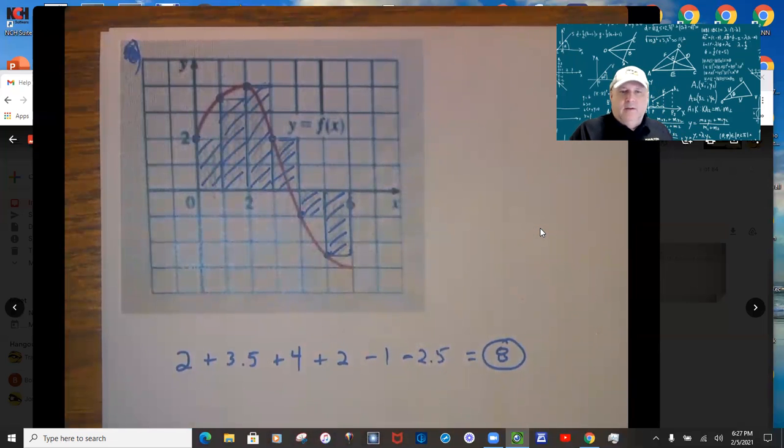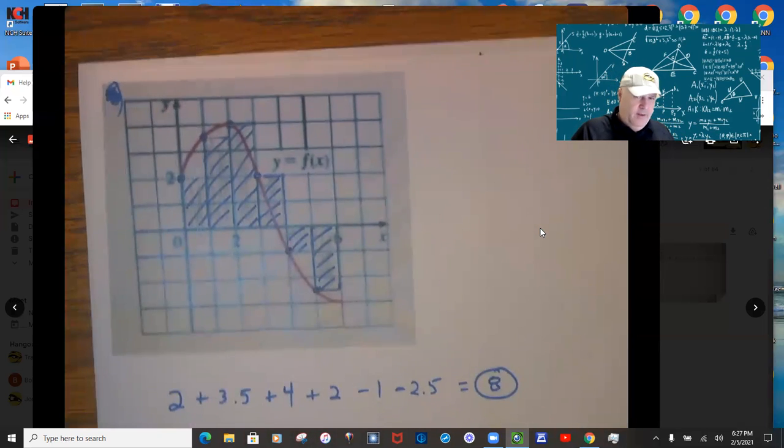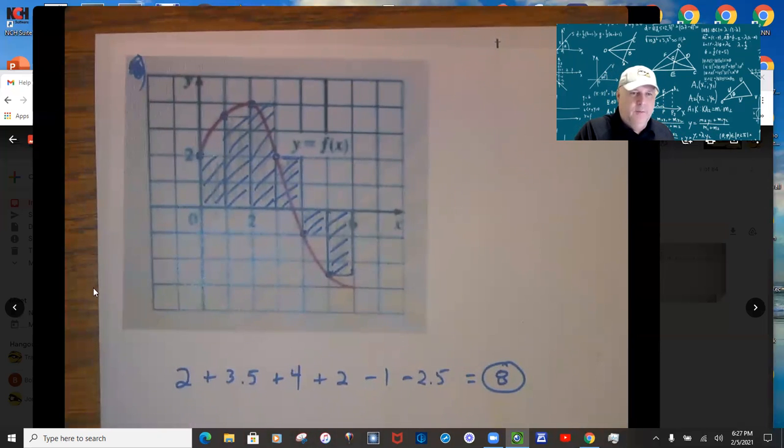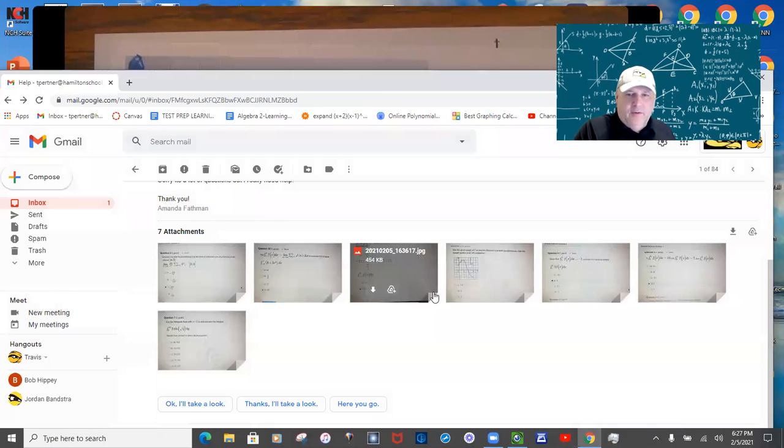So if we take the limit as n goes to infinity, now there's an infinite number of rectangles and they would all fit under there perfectly. And so that's what that first problem was getting at. It was a little confusing with the way they posed it, but that's what it was getting at. So that answer is eight.